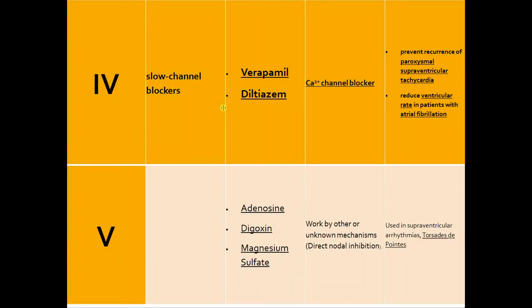Class 5 is a wastebag that includes adenosine, digoxin, and magnesium. This is an interesting group of medications with unknown mechanism. Adenosine is specifically used for diagnosis of supraventricular tachycardia. Digoxin is used for heart failure. Magnesium sulfate is specifically used in polymorphic ventricular tachycardia, also known as Torsades de Pointes.